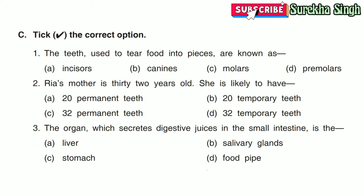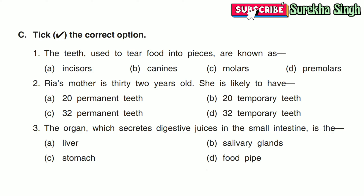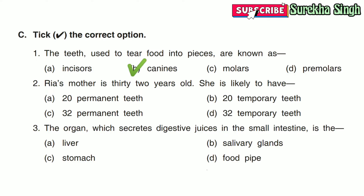Question C: Tick the correct option. 1. The teeth used to tear food into pieces are known as — Incisors, Canines, Molars, Pre-Molars. The correct answer is Canines. Canines are used to tear food into pieces.